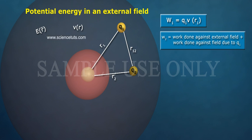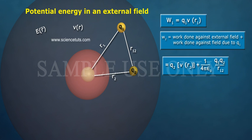This equals Q2 of V of R2 plus 1 by 4 pi epsilon naught Q1 Q2 by R1 to 2.